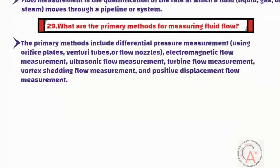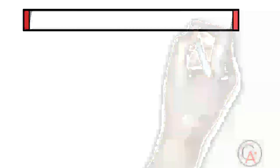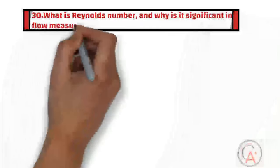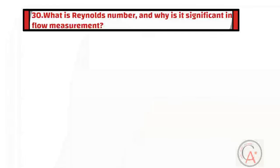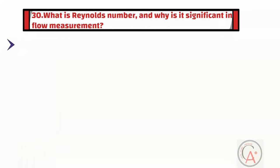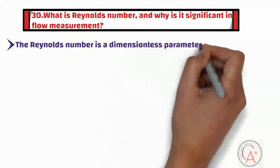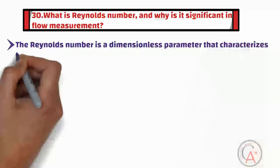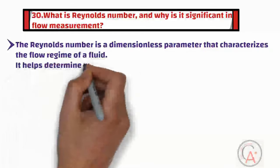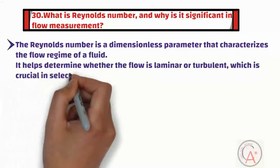The thirtieth question is: what is Reynolds number and why is it significant in flow measurement? The Reynolds number is a dimensionless parameter that characterizes the flow regime of a fluid. It helps determine whether the flow is laminar or turbulent, which is crucial in selecting the appropriate flow measurement technique.